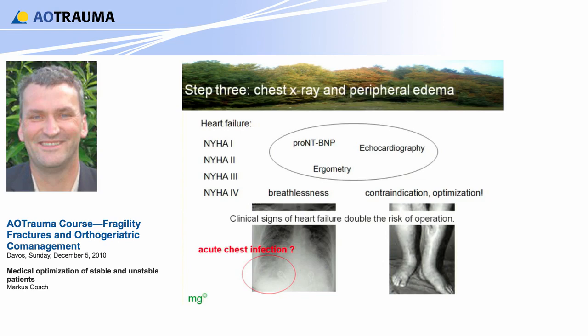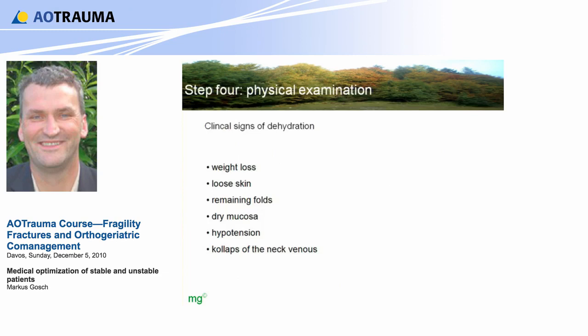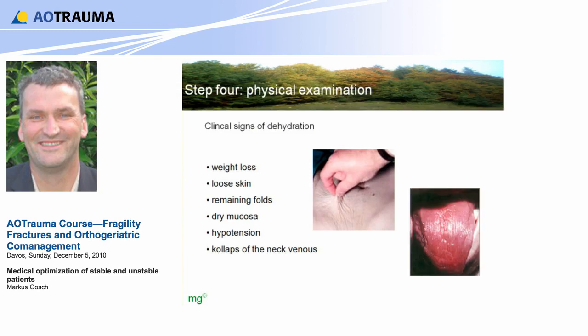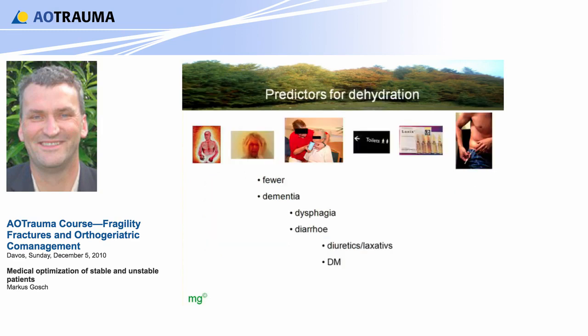Step 4 is the physical examination. You have to look for clinical signs of dehydration: ask for weight loss, look for loose skin and remaining folds — not over the hand, but here on the chest. Also look for dry mucosa, hypotension, and collapse of the neck veins. Dehydration is a very great problem for a patient, and the predictors are very common in geriatric patients: fever, dementia, dysphagia, use of diuretics, laxatives, and also diabetes mellitus.